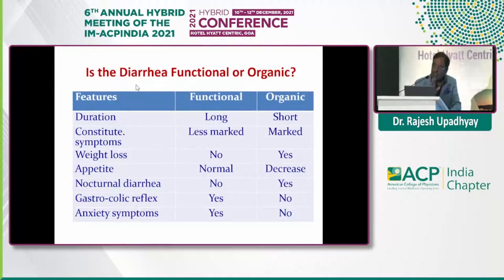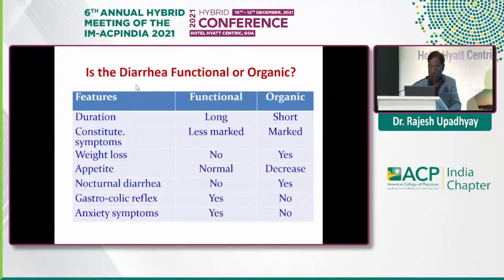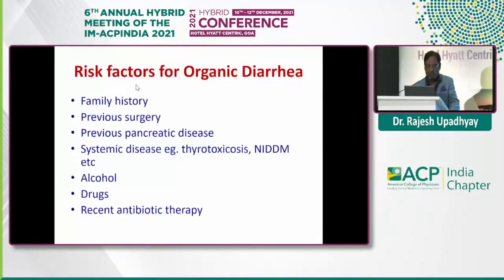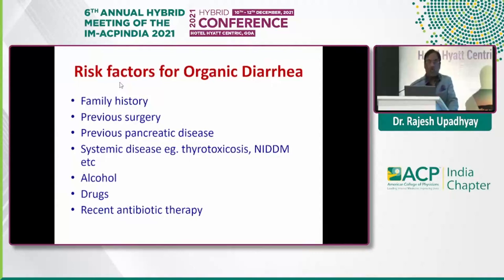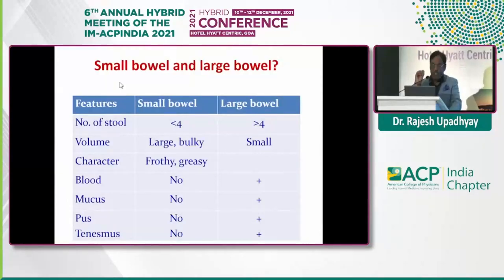Nocturnal diarrhea is usually suggestive of organic disease. There is no exaggeration of gastrocholic reflex in organic disease, but tenesmus may be present, and anxiety symptoms are less common. Risk factors requiring further investigation include family history, previous surgery, previous pancreatic disease, thyroid disease, diabetes, alcohol history, and medication use. Remember that antibiotic-associated diarrhea can present weeks after antibiotic use.